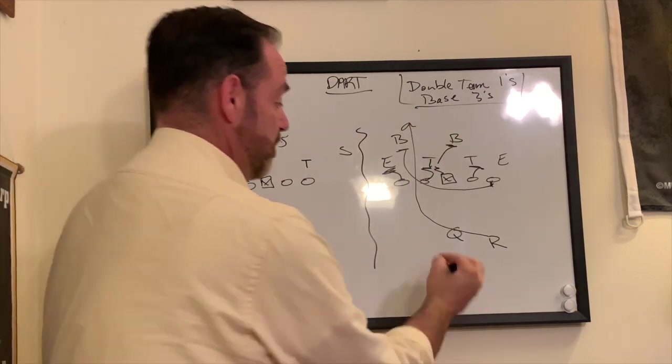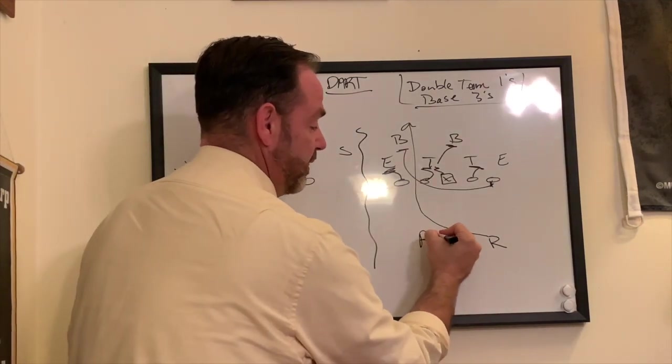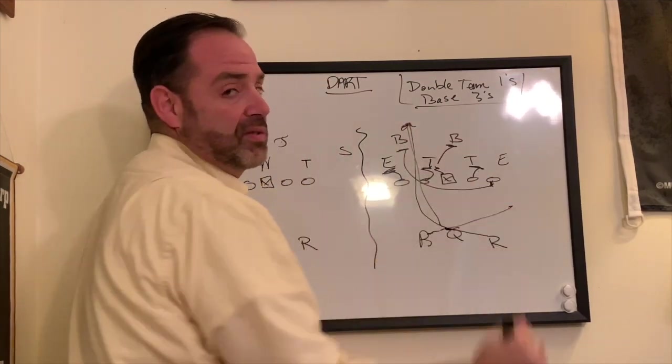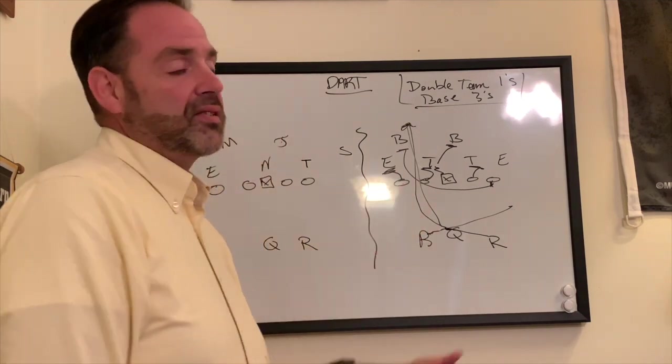Now, same blocking scheme, move the back over on this side, flash fake him across, quarterback keeps it, comes downhill. So you have two run plays, one blocking scheme.